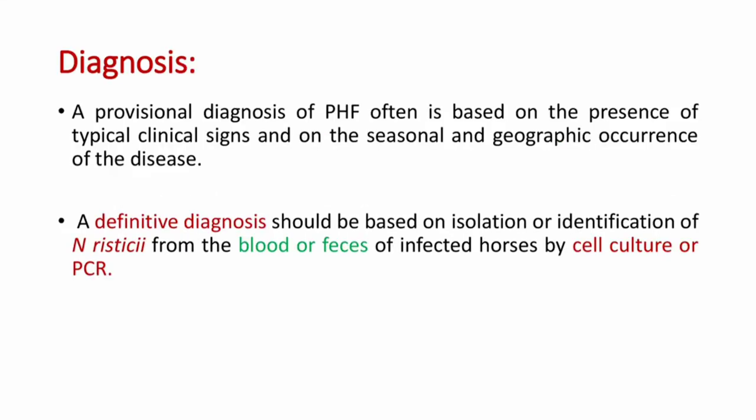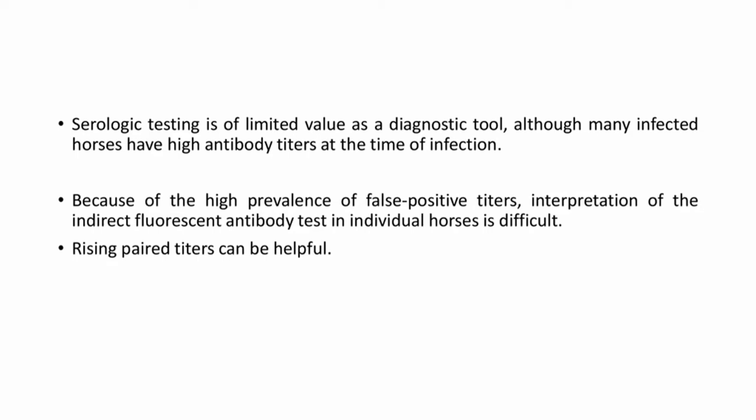A provisional diagnosis of PHF is often based on the presence of typical clinical signs and seasonal and geographic occurrence of the disease. Definitive diagnosis should be based on isolation or identification of Neorickettsia risticii from blood or feces by cell culture or PCR. Serologic testing is of limited value as a diagnostic tool; interpretation of indirect fluorescent antibody tests in individual horses is difficult, though rising paired titers can be helpful.